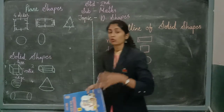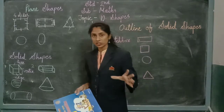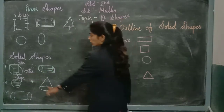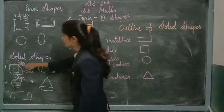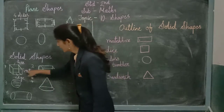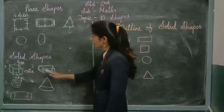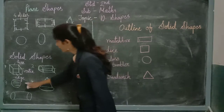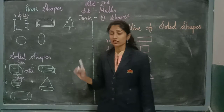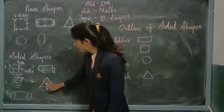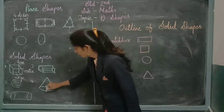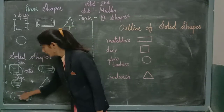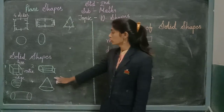Now let us move to solid shapes. Solid shapes are those shapes which occupy a space. The first example is a cube — a cube has a plane face, vertices, and edges. Same with a cuboid — a cuboid has faces, vertices, and edges. A sphere has only one curved face, no vertices, no sides. A cone has one curved face and one plane face. A cylindrical shape has two plane faces and one curved face. So this was all about solid shapes.